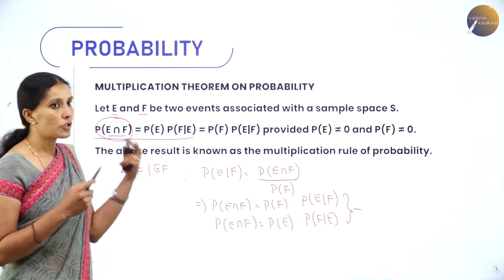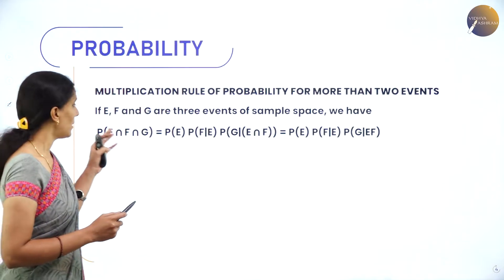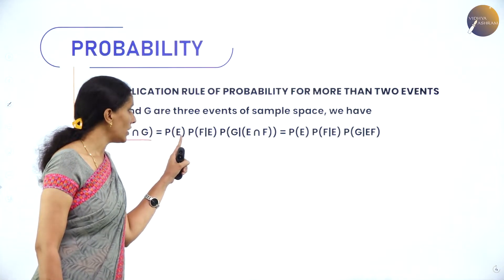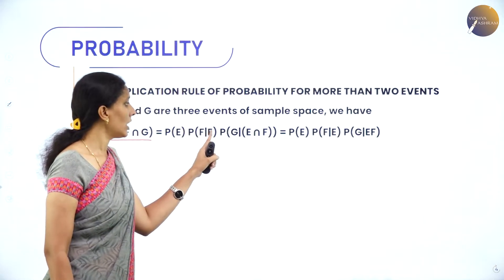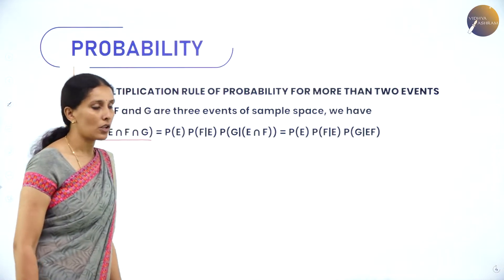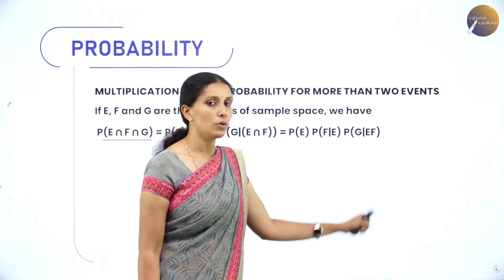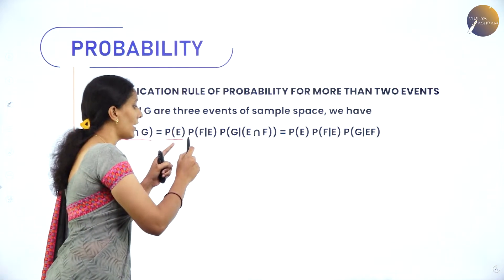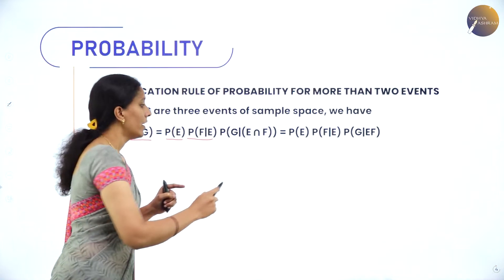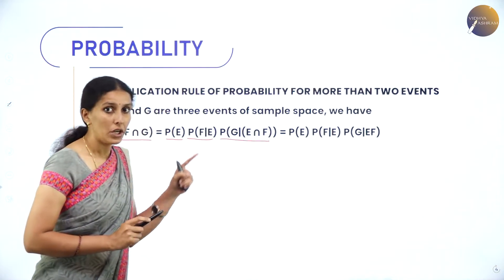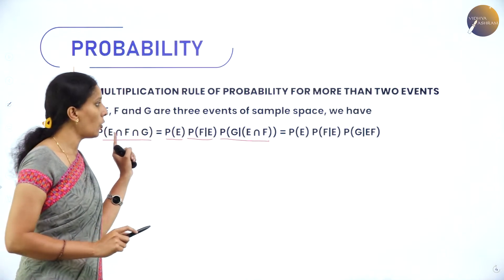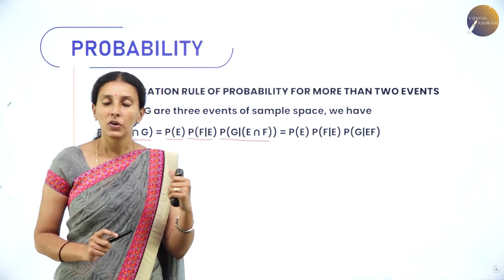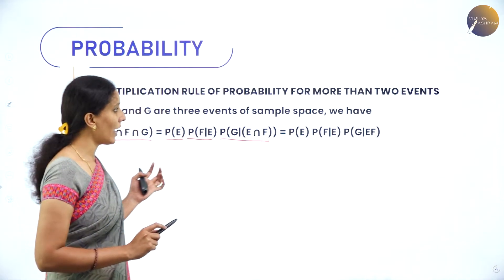This theorem can also be extended to three events. P(E∩F∩G) can be written as P(E)·P(F|E)·P(G|E∩F). That means first we calculate probability of event E, then probability of event F given E has occurred, then probability of G given both E and F have already happened. We can also extend the multiplication rule to n number of events.